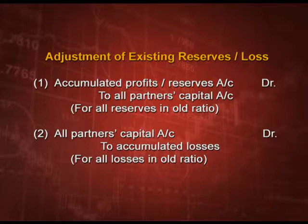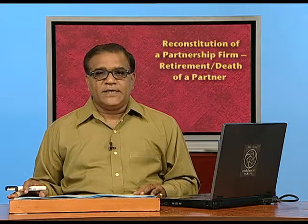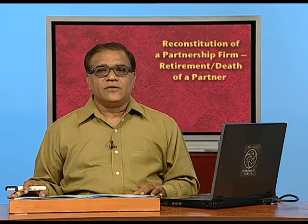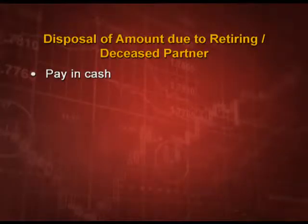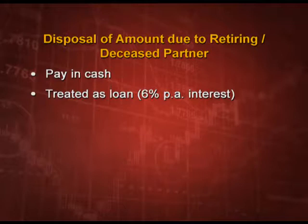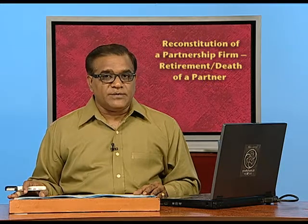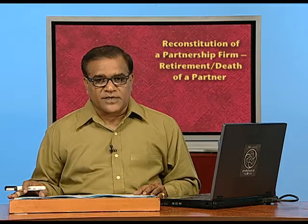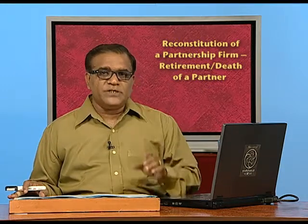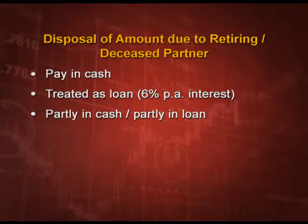Partners will receive if there are profits and will bear if there are losses. How to calculate the amount due to the retiring or deceased partner and how to dispose of it: first option is to pay in cash or by cheque. You may also treat it as a loan, but then you have to pay 6 percent per annum. If you are not paying immediately, you have to pay 6 percent per annum. Sometimes you can have a combination — partly in cash and partly in loan — but please remember interest will be there on the loan amount.